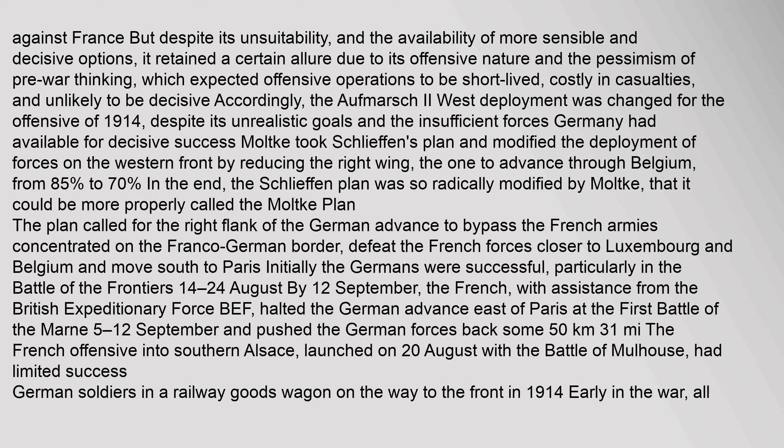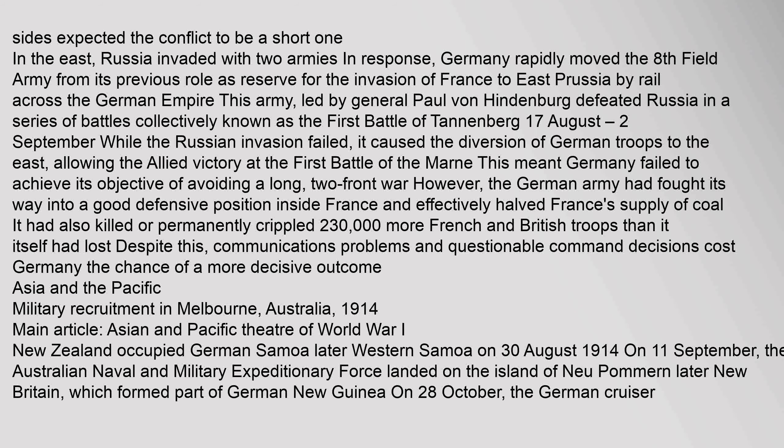Moltke took Schlieffen's plan and modified the deployment of forces on the western front by reducing the right wing — the one to advance through Belgium — from 85% to 70%. The plan was so radically modified by Moltke that it could be more properly called the Moltke Plan. The plan called for the right flank of the German advance to bypass the French armies concentrated on the Franco-German border, defeat French forces closer to Luxembourg and Belgium, and move south to Paris. Initially the Germans were successful, particularly in the Battle of the Frontiers 14–24 August. By 12 September, the French, with assistance from the British Expeditionary Force, halted the German advance east of Paris at the First Battle of the Marne 5–12 September and pushed the German forces back some 50 kilometers. Russia invaded with two armies; Germany rapidly moved the Eighth Field Army to East Prussia by rail, and led by General Paul von Hindenburg, defeated Russia in a series of battles collectively known as the First Battle of Tannenberg, 17 August.